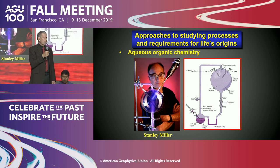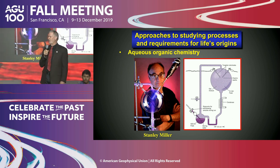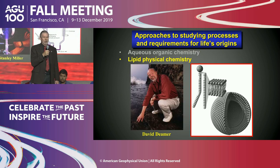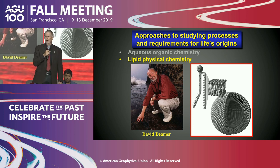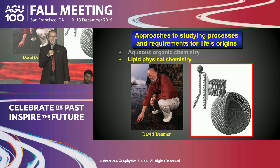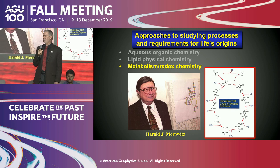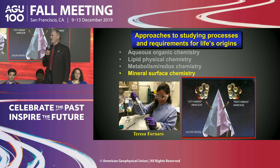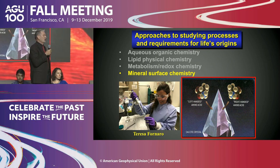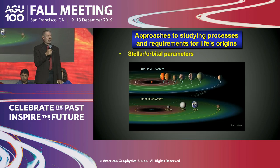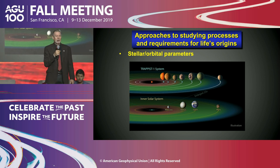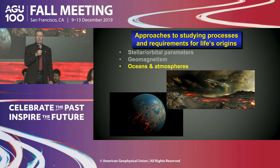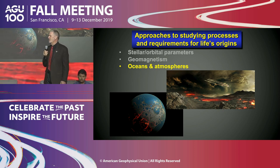Many people come into the field from organic chemistry. Stanley Miller focused on carbon, hydrogen, nitrogen, and oxygen, and what electric sparks could do. Others think about lipid chemistry — Dave Diemer and Luisi have focused on formation of vesicles and membrane-like structures. Some focus on metabolism and redox chemistry, where transition elements and minerals become important. We've also been looking at mineral surface chemistry. These are very different specialties, sometimes talking at cross-purposes. From the planetary science side, the type of stars, orbital parameters, geomagnetism, magnetic fields, ocean and atmosphere evolution, geodynamics, and plate tectonics all become important.